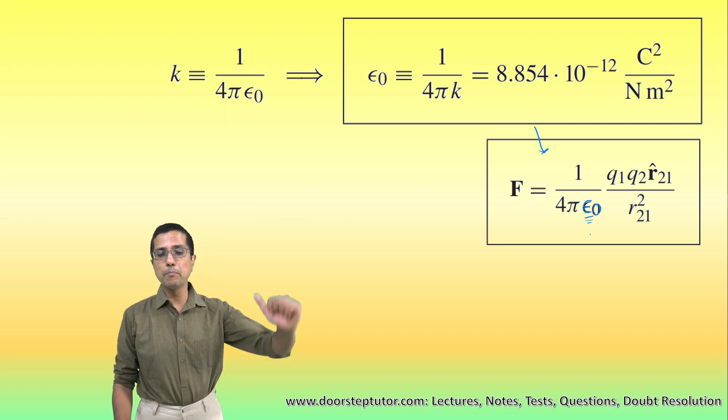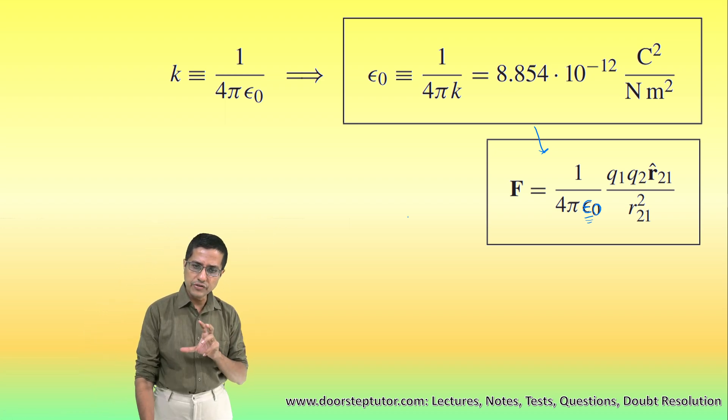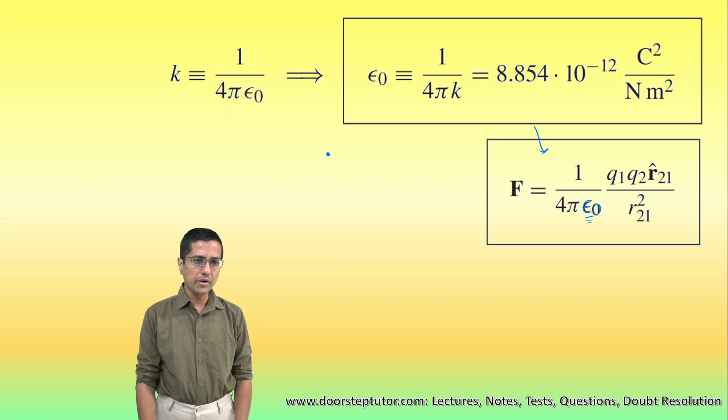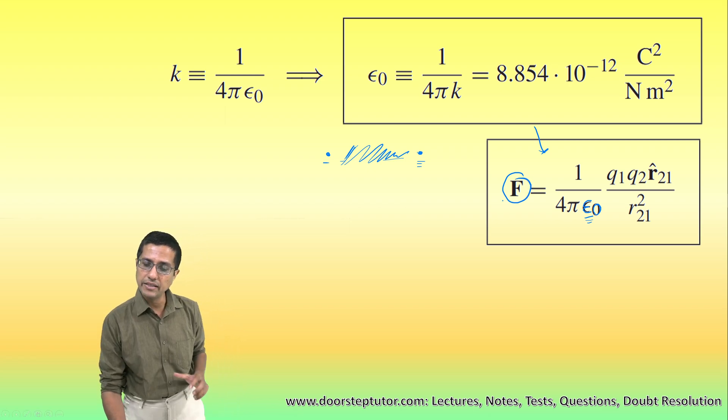which is known as the permittivity of vacuum. So this epsilon naught actually tells us what proportion of the force which is generated by these two charges actually propagates, is actually allowed by the medium. The medium here between these two charges absorbs certain amount of this force.